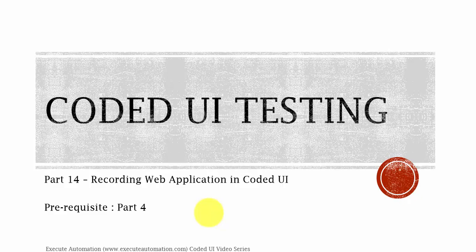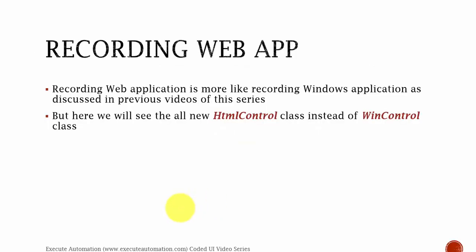We are just going to record a web application in this part. Recording a web application is more like recording a Windows application as discussed in the previous video. But here we will see the all-new HTML control class instead of Windows control class. We will also start using filter properties while searching application properties, instead of just search properties which we used with win controls in the calculator application recording.